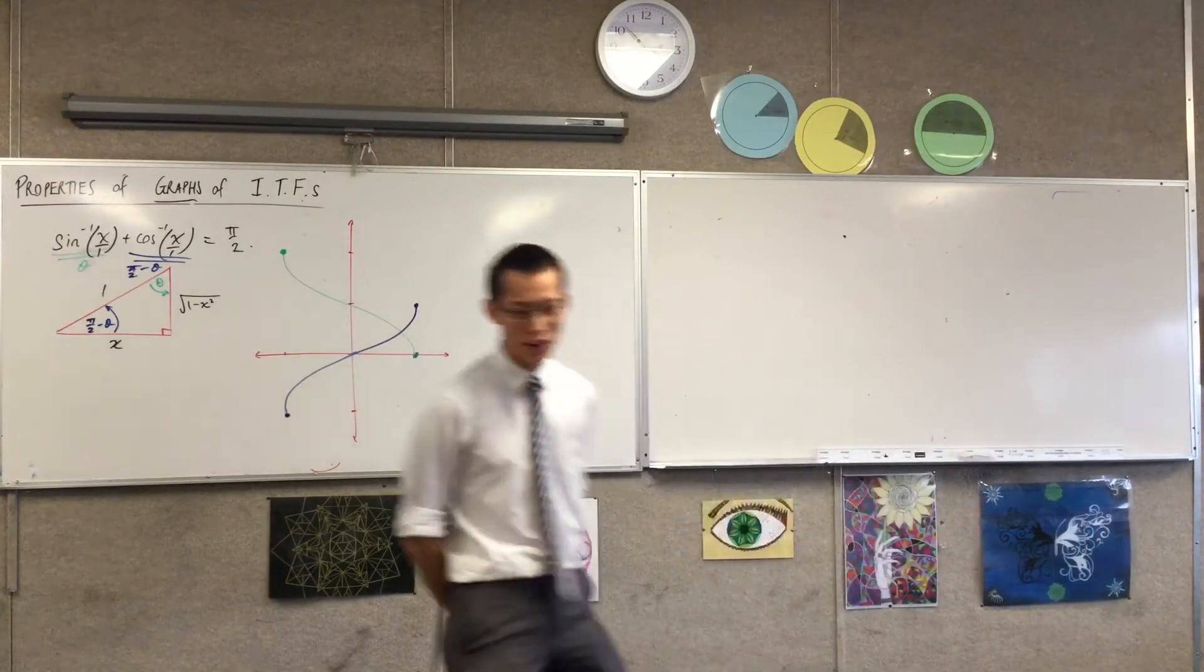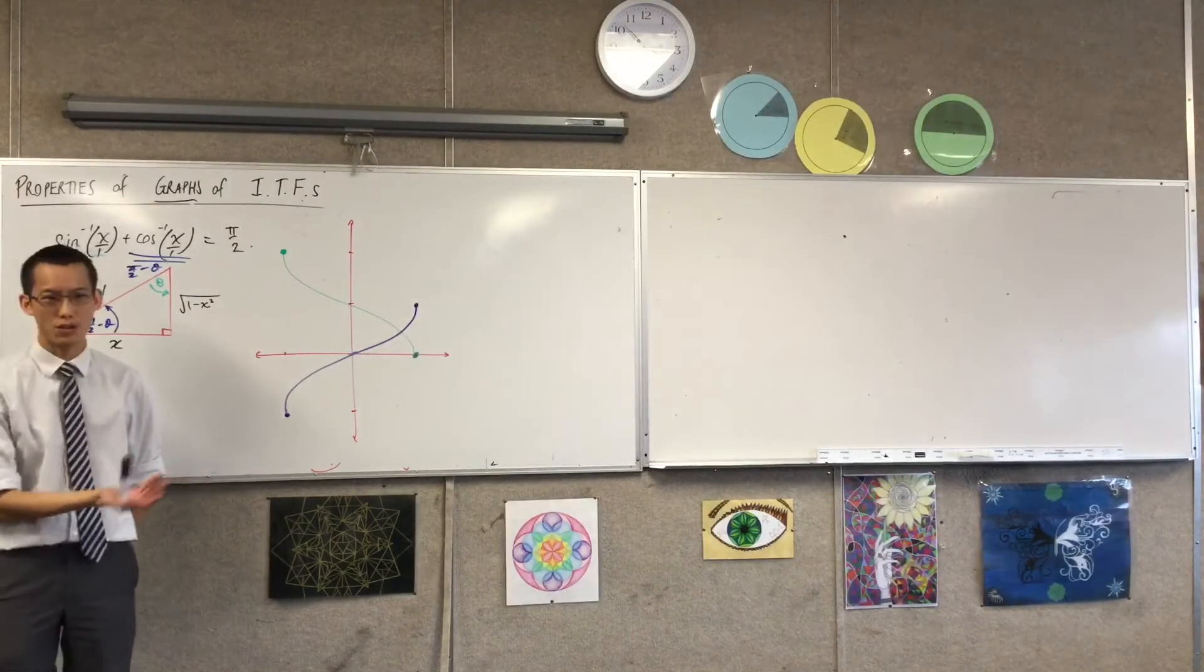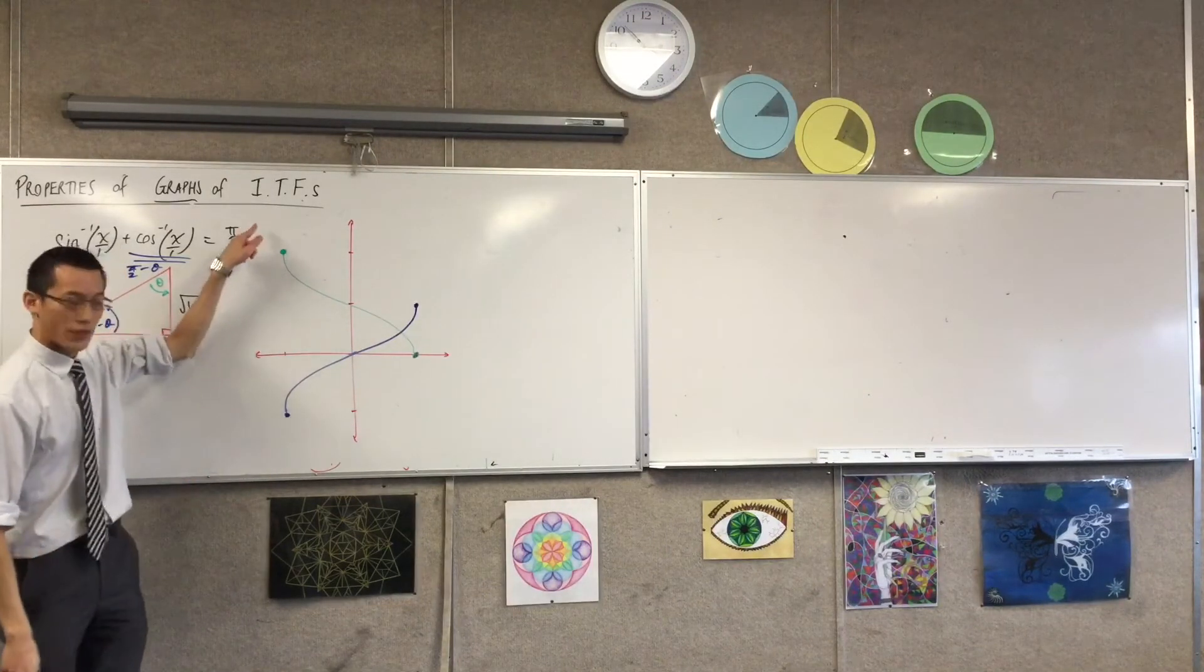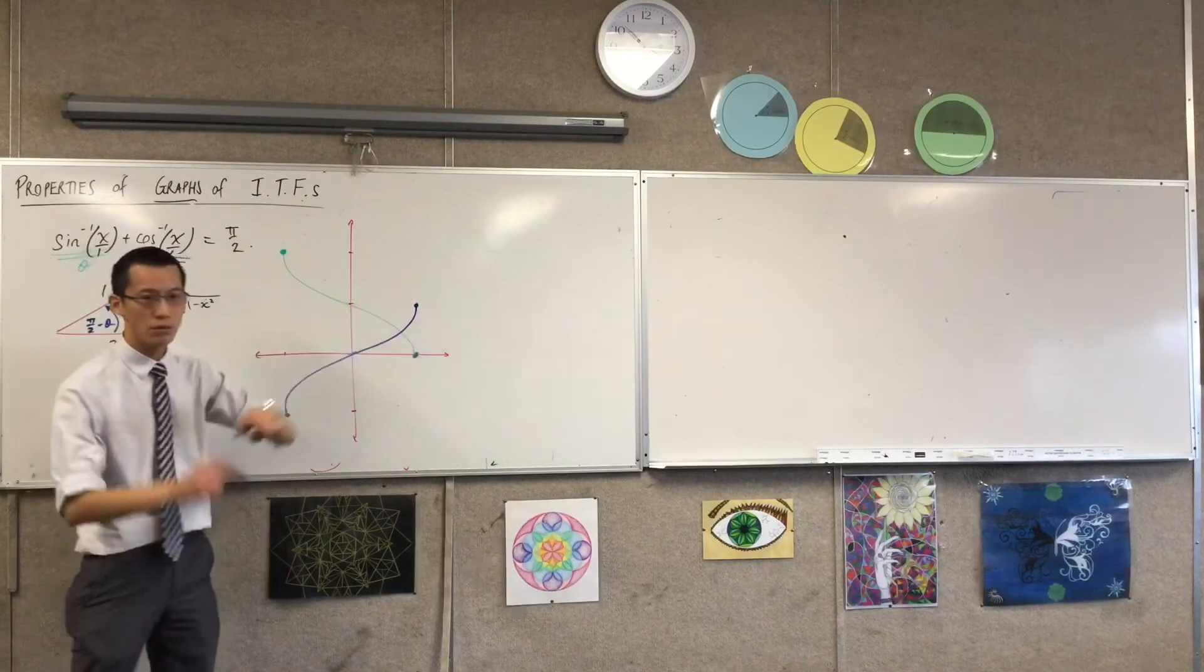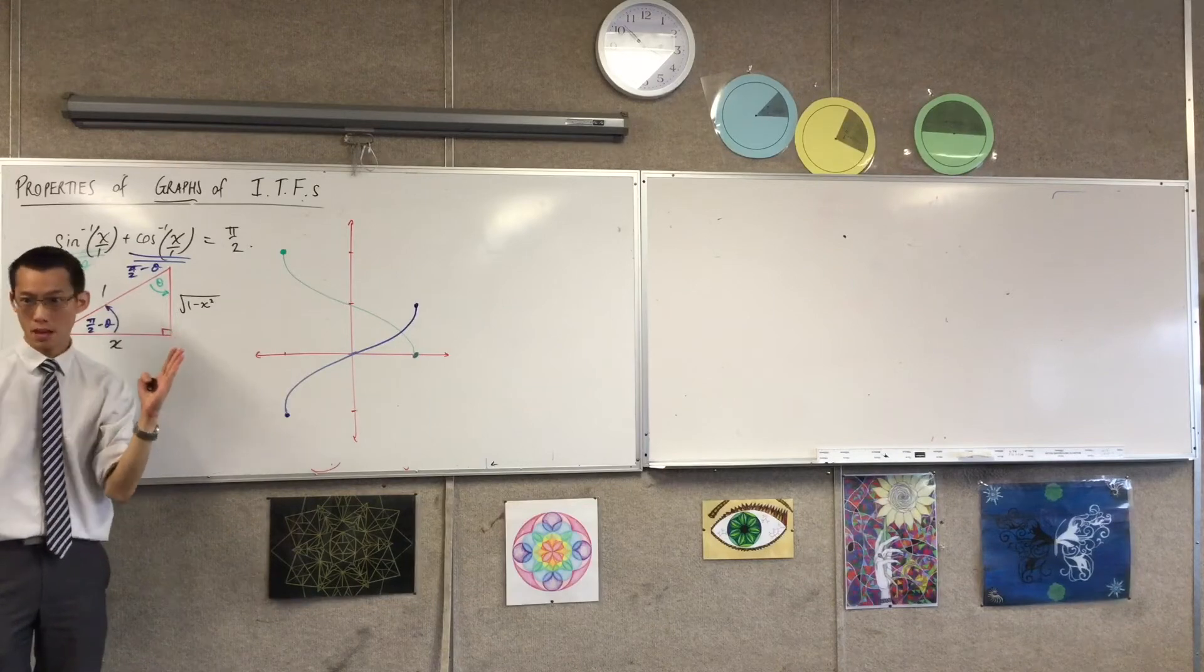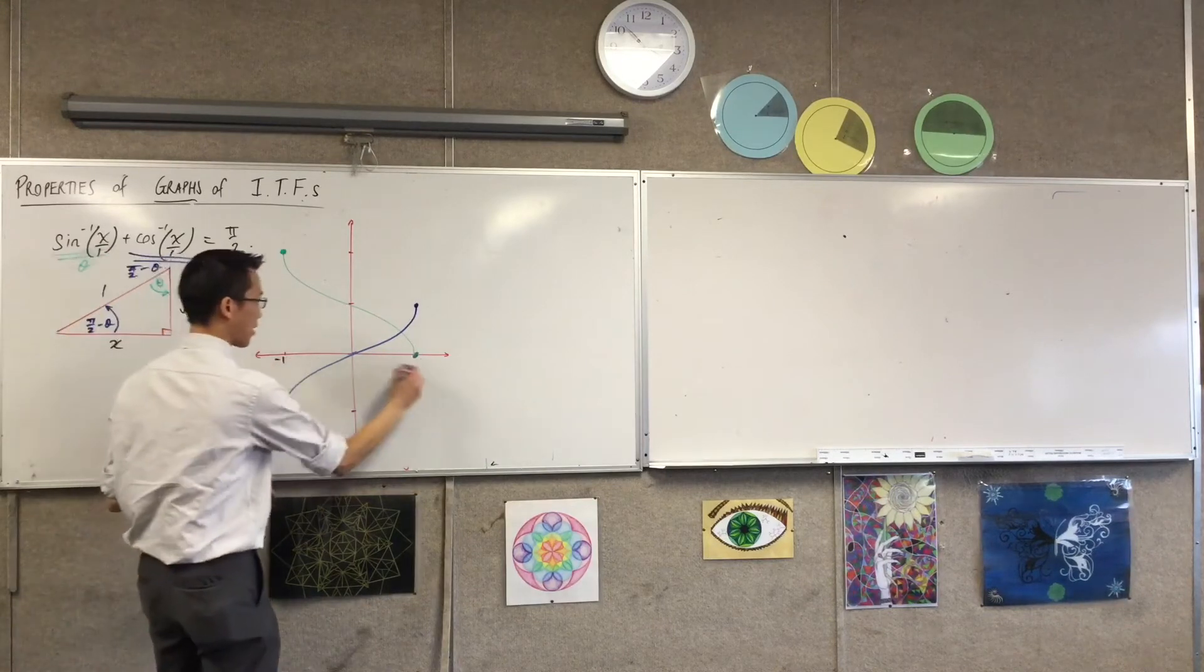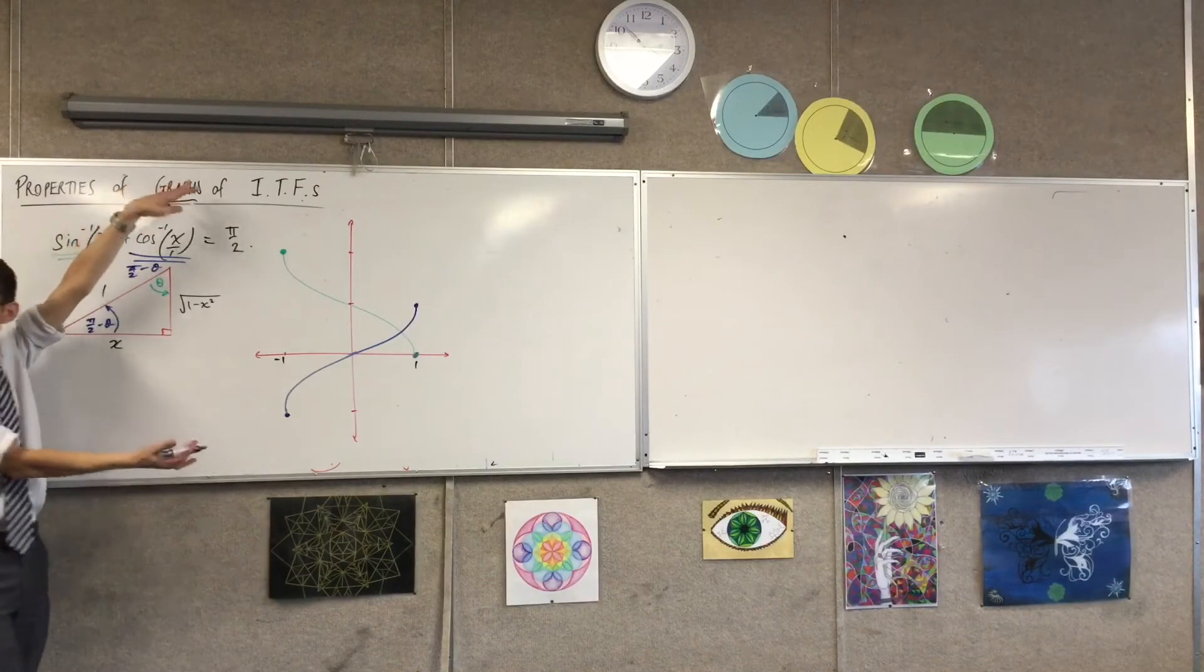Now what I have left off of this is I have no actual values here, right? So I've got my cosine inverse graph in green, I've got my sine inverse graph in blue. Where's my domain restriction at the moment? Negative 1 to 1, so I'm going to slap that guy in there.